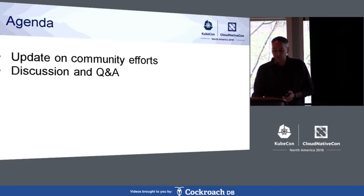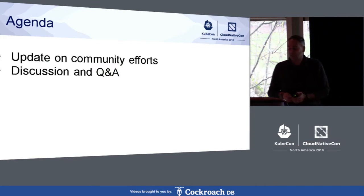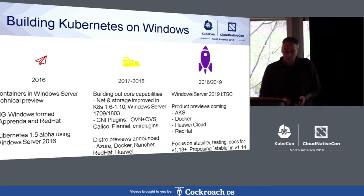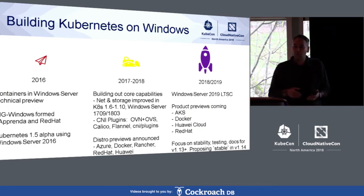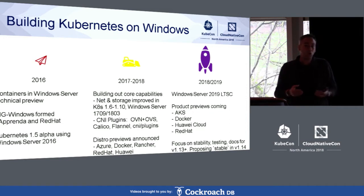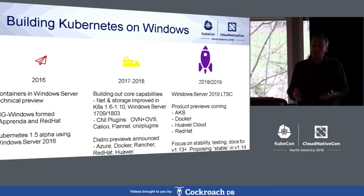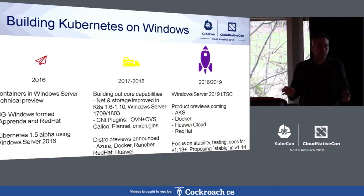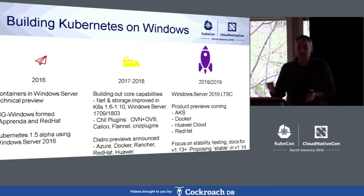Starting in early 2016, we formed the SIG with the singular effort of bringing Windows Server and Windows Server containers into Kubernetes. Our goal was never to substitute the entire control plane of Kubernetes with Windows, but more importantly to bring Windows Server as a compute node to Kubernetes. All master components still run on Linux, but you'll be able to have both Windows and Linux compute nodes working together for your applications.